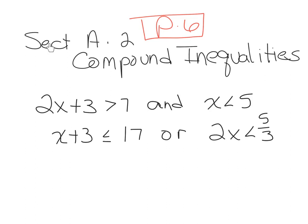This is Intermediate Algebra. We're in Section A.2, and the topic is Compound Inequalities, starting on page 6 of your textbook. The first thing we see is a couple of examples of what a compound inequality looks like. Inequality has to do with the greater than and less than symbols. A compound inequality gives us the presence of two key words: AND and OR.